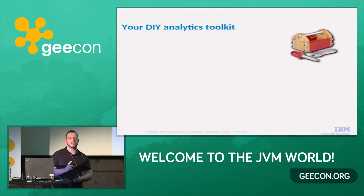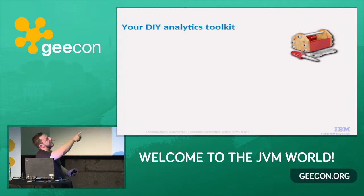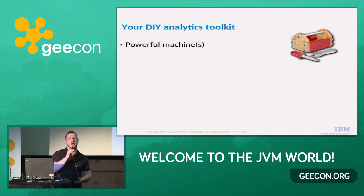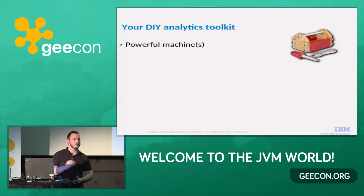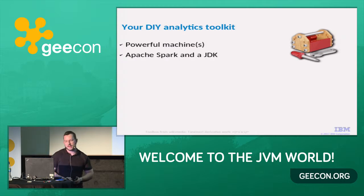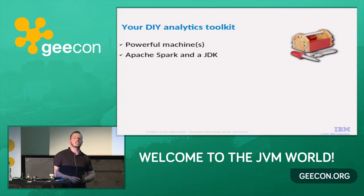This is really one of the most important slides. So what are you going to need? Powerful machines — multiple is optional, but don't try this on a really old Windows machine with no RAM and a terrible processor. A Linux laptop is good; you can also try it on a Mac. You're going to need Apache Spark itself — that's a no-brainer. And a JDK: OpenJDK or IBM's SDK for Java would both work with it.